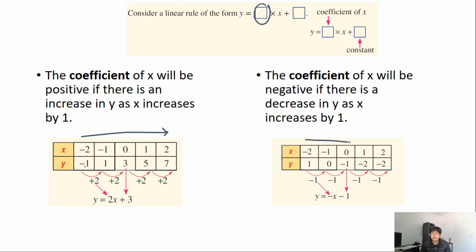x is still increasing by one across to the right, but in this case y is going down by one, so the coefficient of x will be a negative value. In the first case y is increasing by two each time x goes up by one, so the coefficient is positive two. In the second case y is going down by one each time x goes up by one, so that is negative one — giving us y equals negative one x minus one, which is the same as y equals negative x minus one.